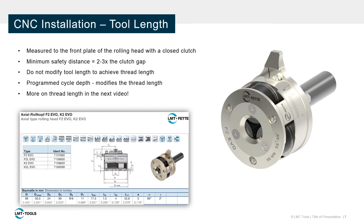Measuring tool length is necessary for safety and proper function of this tool. It is important to give this tool plenty of space while moving around the workspace. Typically, two to three times the clutch gap is a reasonable distance for safety clearance. Tool length should not be used to achieve thread length; instead, use the cycle depth to modify thread length.